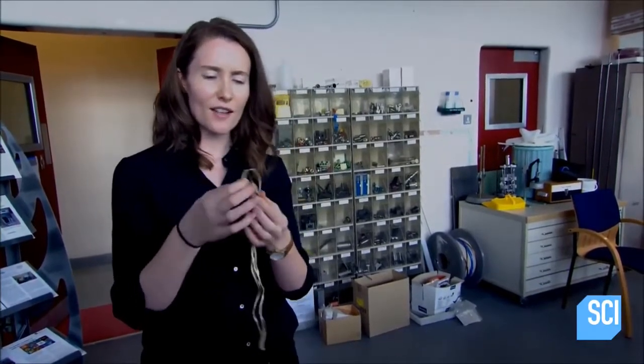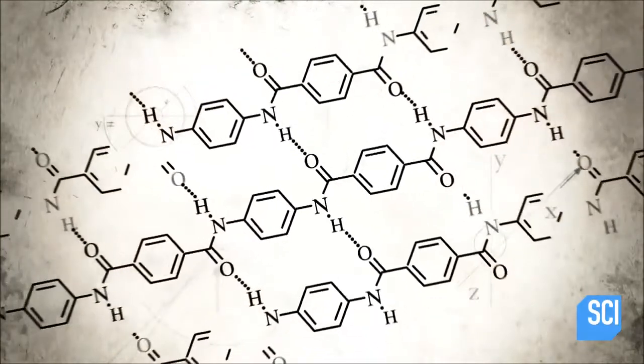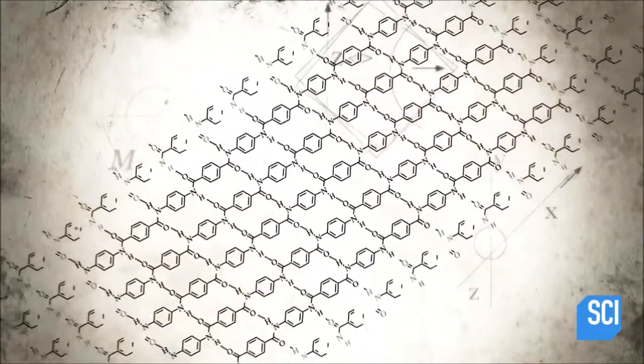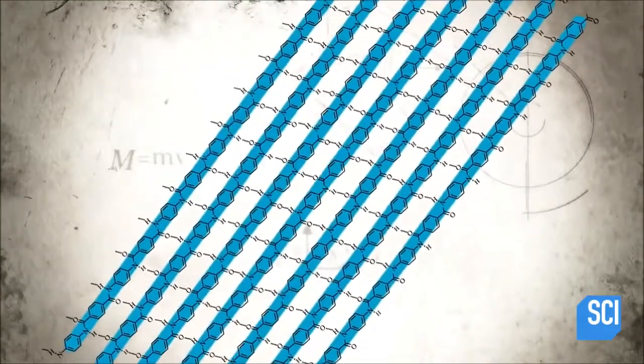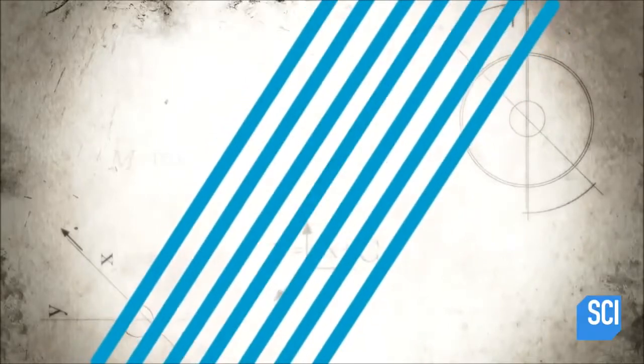So Kevlar starts out as kind of a long, thin chain of molecules. These molecules extend and form straight parallel chains. Because of this configuration, the strands form hydrogen bonds, which act like glue.